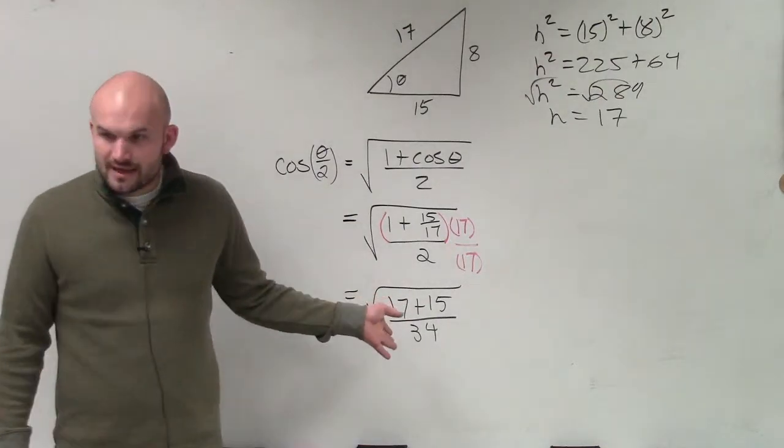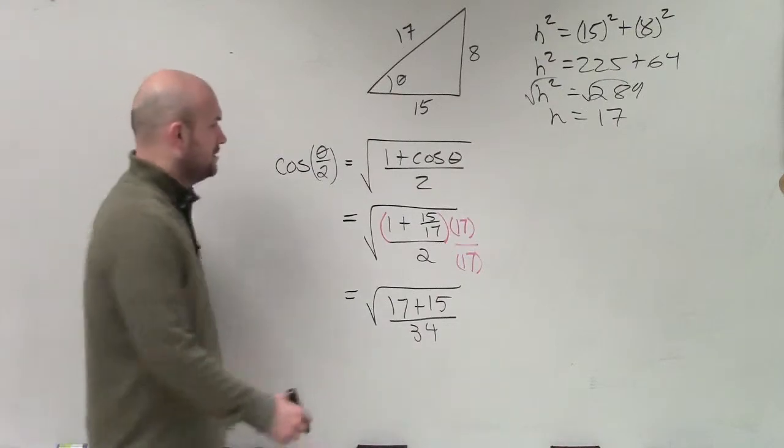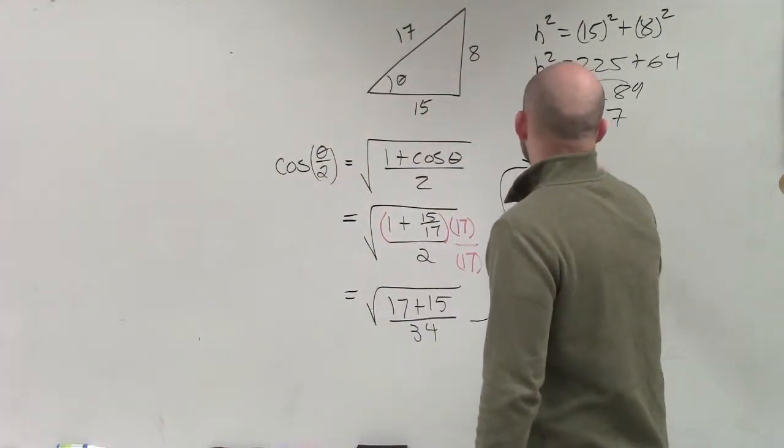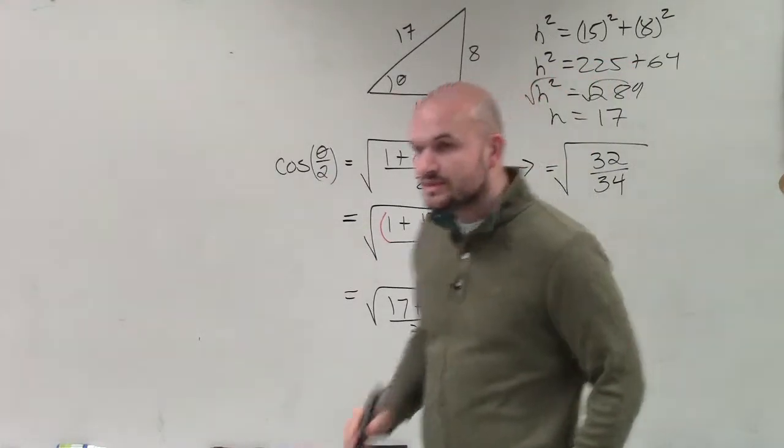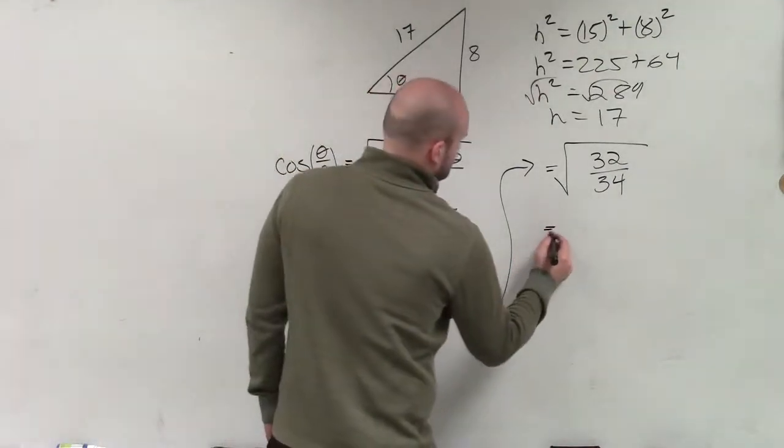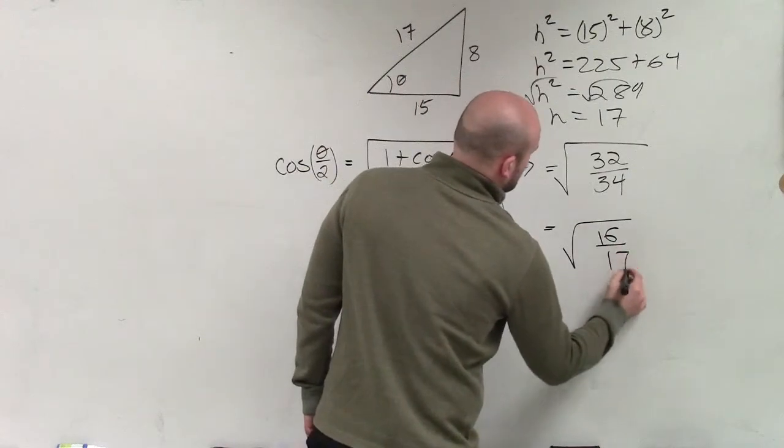And now I can obviously add this, which is going to be 32, correct? So I'm going to work this back over here. So now I have 32 over 34. Well, I can at least reduce that to 16 over 17 by dividing 2 on the top.